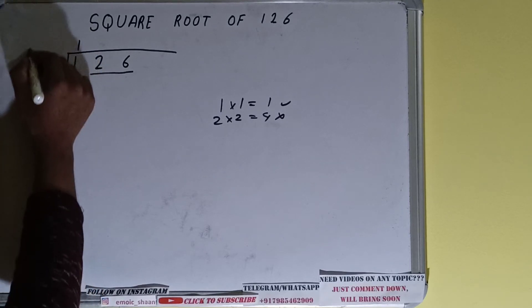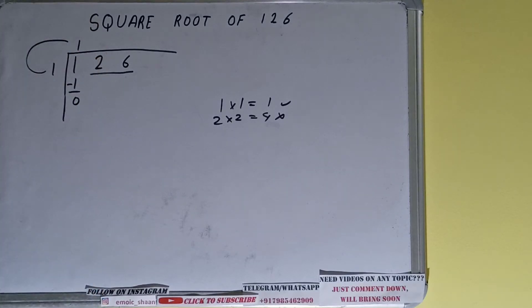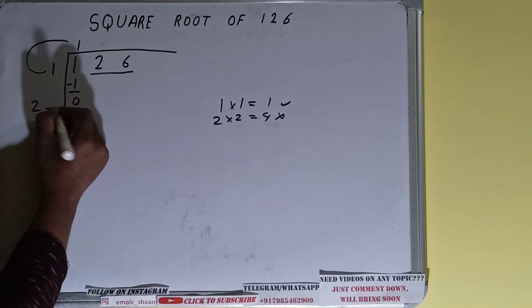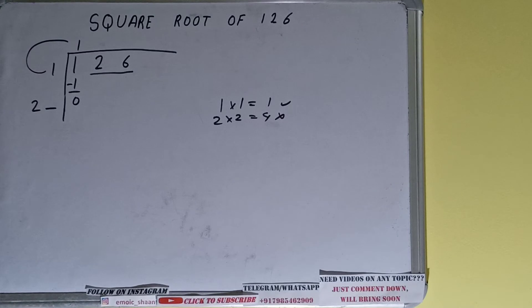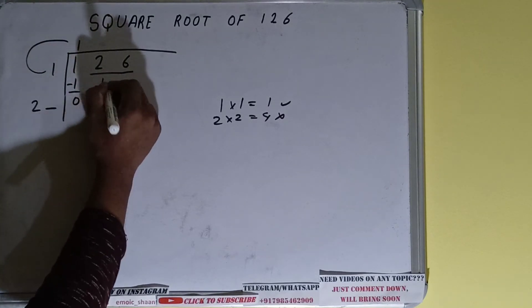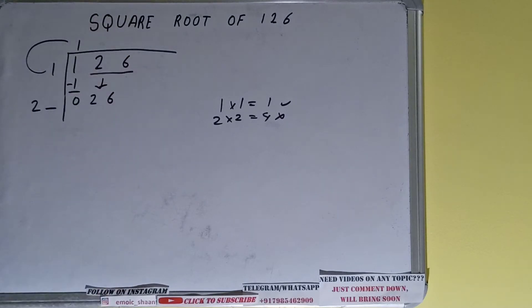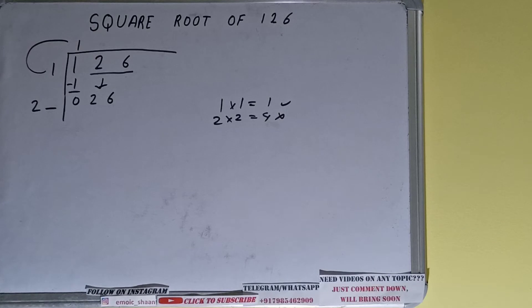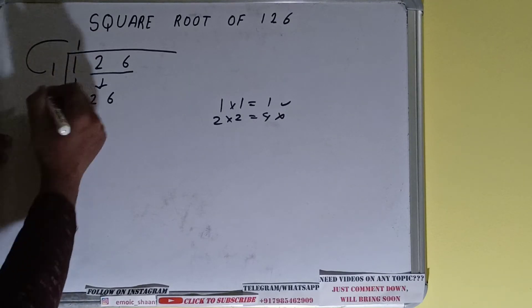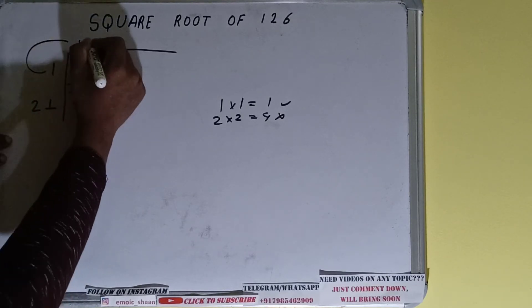Now whatever is your divisor, add it with what you multiplied with — we did one into one, so one plus one equals two. Keep one digit extra. Now bring the next pair down and it will become 26. The rule is whatever number we place here we have to place here also, so one here and one here.